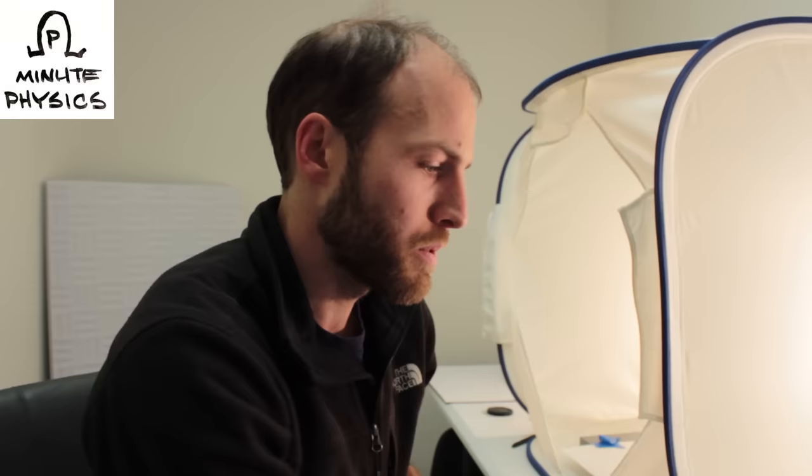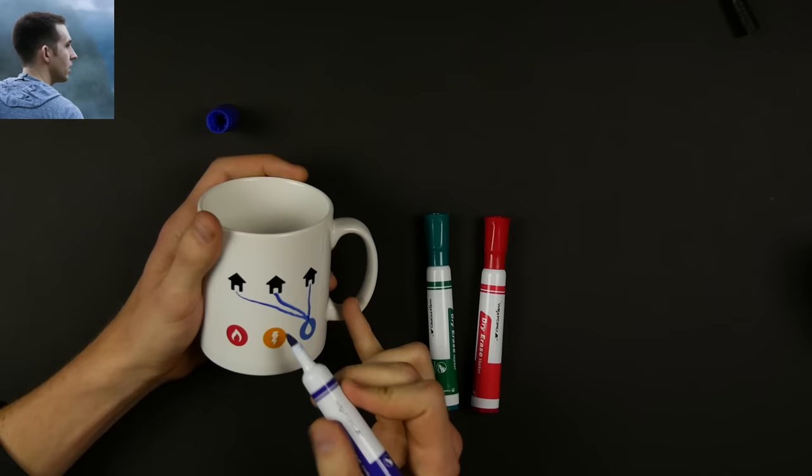We've got three different houses here, three different cottages, and then three different utilities: the gas, the power, and the water. Draw a line from each of the three utilities to each of the three houses. So nine lines in total. Without letting any two cross. No two lines cross.